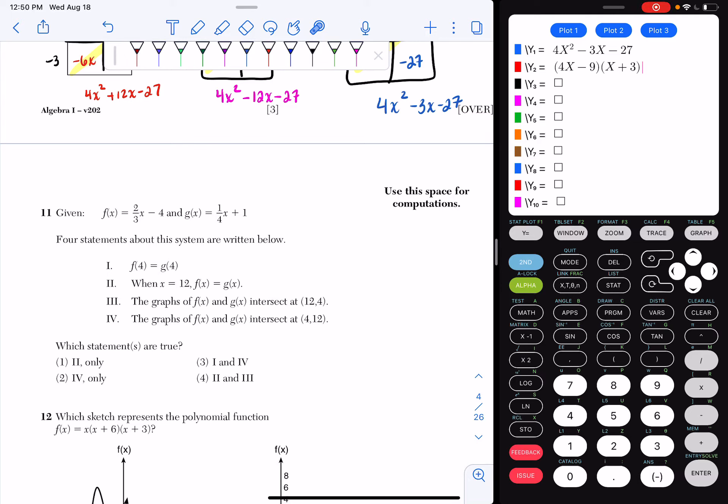Okay, so question number 11. Given f of x equals 2 thirds x minus 4 and g of x equals 1 fourth x plus 1. Four statements about this system are written below.